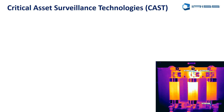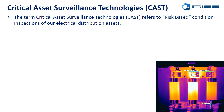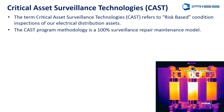Before I go into this in any great depth I'd like to talk about something we at IRS call Critical Asset Surveillance Technologies, or CAST. The term CAST refers to a risk-based condition inspection of electrical distribution assets. It's a program that's more than surveillance and repair — what we don't do in this methodology is traditional hands-on calendar-based maintenance.